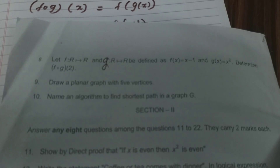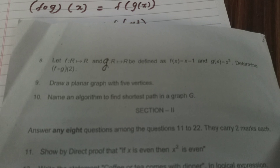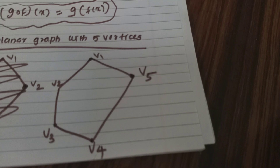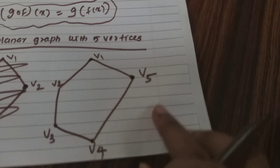The question is: is the planar graph with 5 vertices? If we want to make a planar graph with 5 vertices, we also need to find the name and algorithm to find the shortest path in graph G. In the shortest path, we will identify the naming of the algorithm. The planar graph has 5 vertices and we need to answer about the edges and vertices.